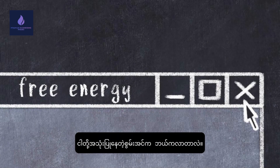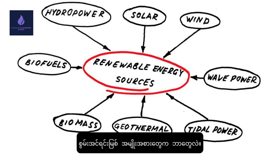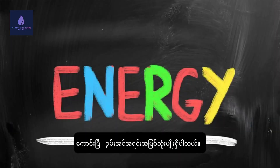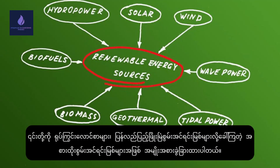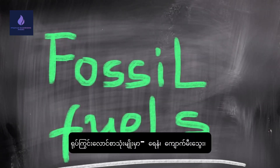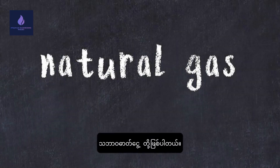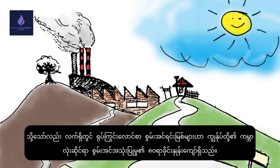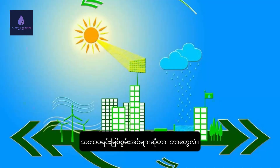Where does the energy we use come from? There are three types of energy sources: fossil fuels, renewable energy sources, and alternative energy sources. The three types of fossil fuels are petroleum, coal, and natural gas. Fossil fuels are non-renewable and are referred to as dirty energy sources because of the large amount of carbon dioxide they emit. Fossil fuel energy sources currently account for more than 80 percent of our global energy use.